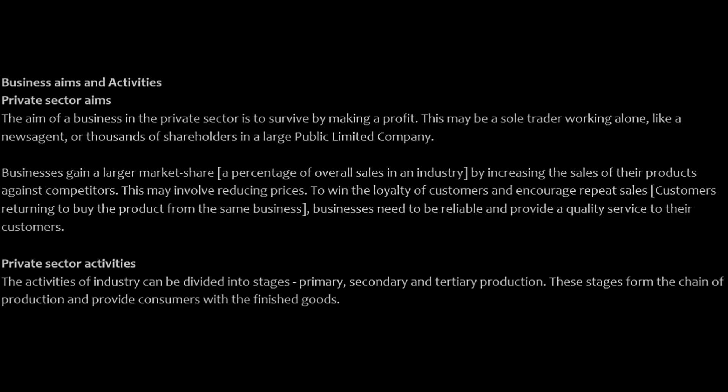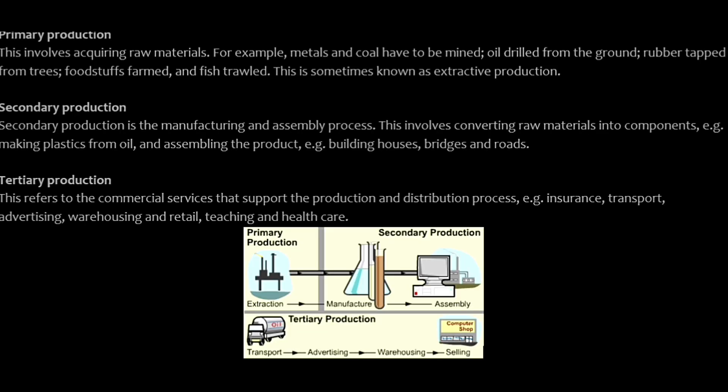The activities of industry can be divided into stages: primary, secondary, and tertiary production. The chain of production provides consumers with finished goods. Primary production involves acquiring raw materials — for example metals, coal, mining, oil drills, timber from trees, and foodstuff. This is also called extractive production.